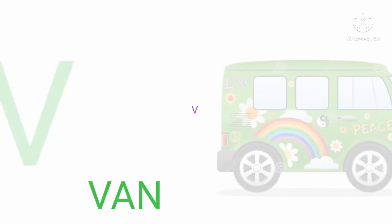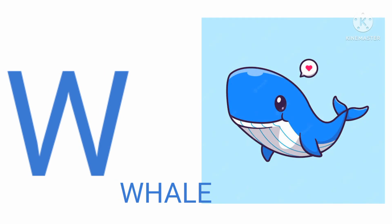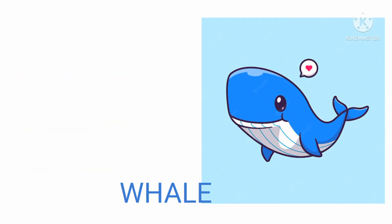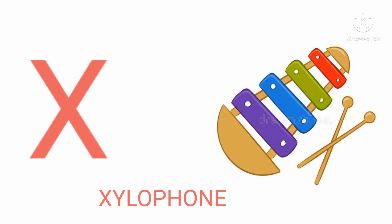U for umbrella, V for van, W for whale, X for xylophone.